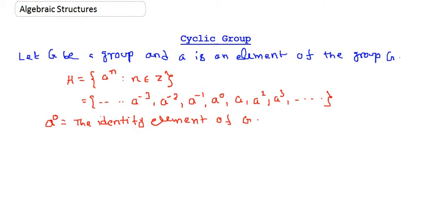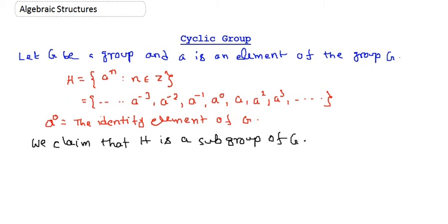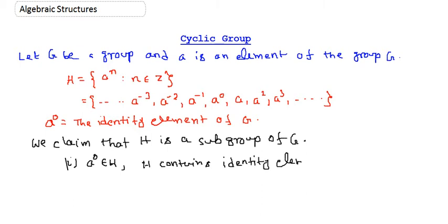Our motivation is to check whether H is a subgroup or not. We claim that H is a subgroup of G. We will show that H satisfies all three necessary and sufficient conditions. First, a^0 belongs to H, so H contains the identity element of G.